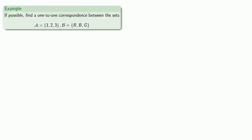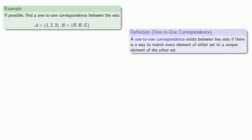For example, if possible, find a one-to-one correspondence between these two sets. Definitions are the whole of mathematics — all else is commentary. We want to find a way, if possible, to match every element of either set to a unique element of the other set.